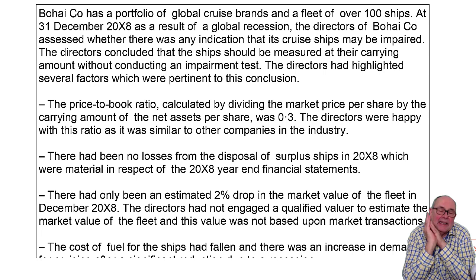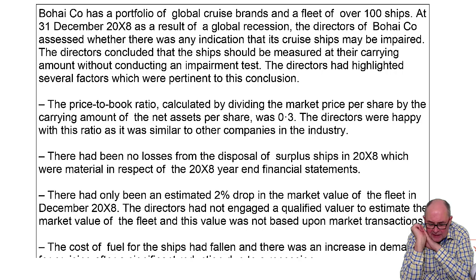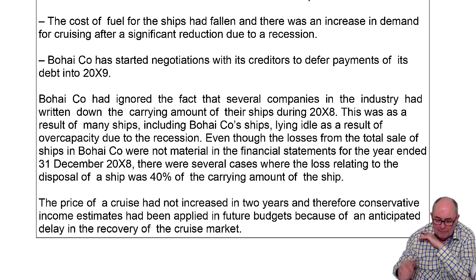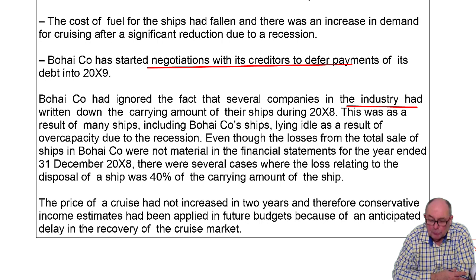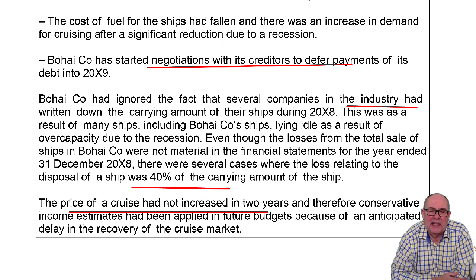We understand it — the price would be £3, the book value of the asset is £10 — but that's going to be quite hard to explain. Look for other things that are easier to explain: the fact that they're negotiating with their creditors, that generally the industry is having a rough time, that there were losses which were 40% of the carrying amount of the ship, and they can't put their selling prices up.